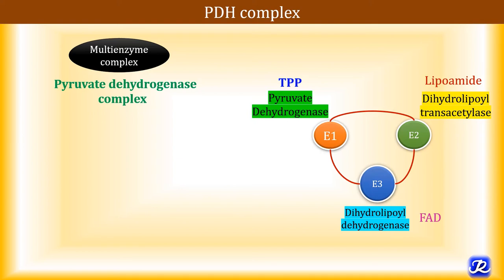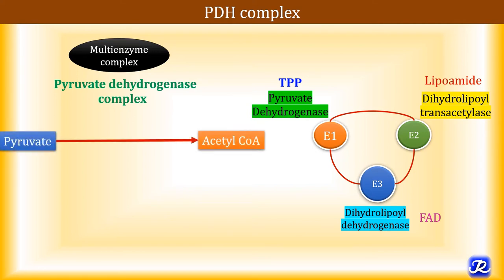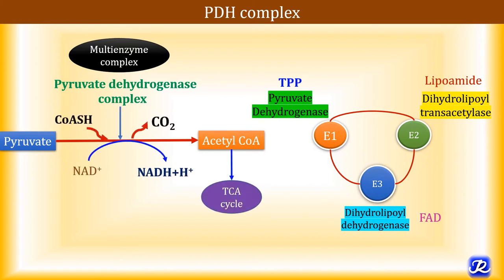The importance of this multi-enzyme complex is that it increases the efficiency of the reaction, because intermediates formed by one enzyme are directly channeled to the next enzyme rather than being released into the medium. The overall reaction is the oxidative decarboxylation of pyruvate to acetyl-CoA, producing NADH and CO₂, with acetyl-CoA then channeled into the TCA cycle.